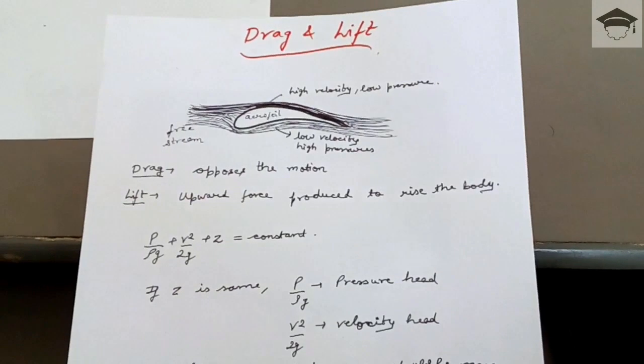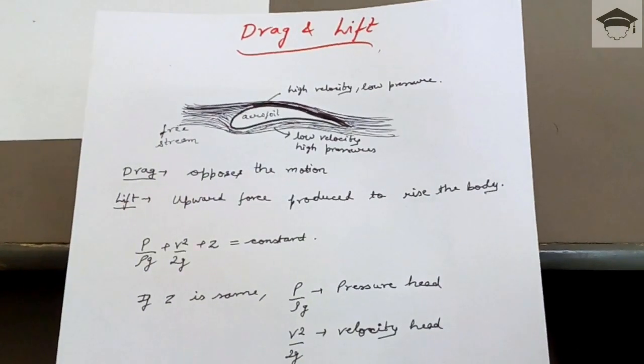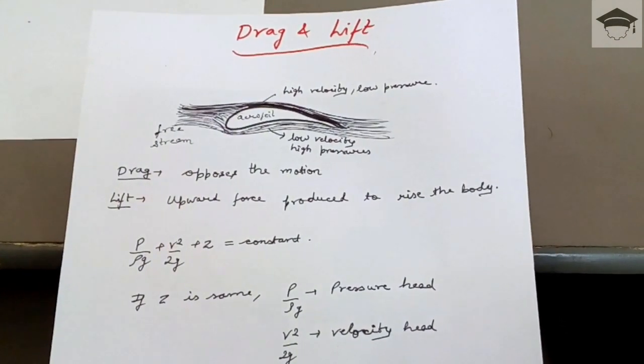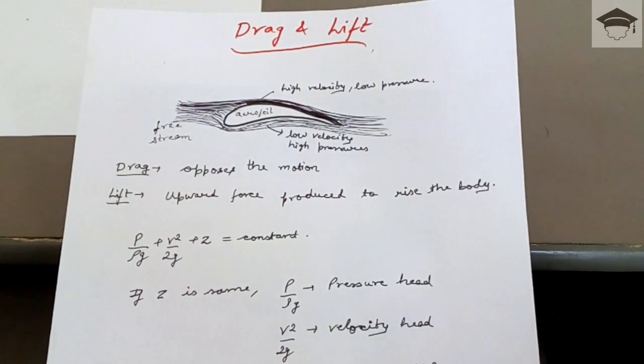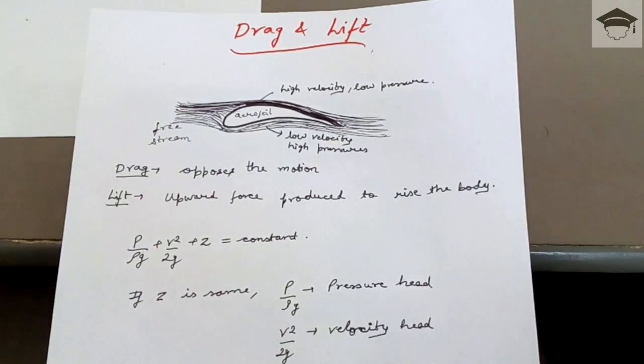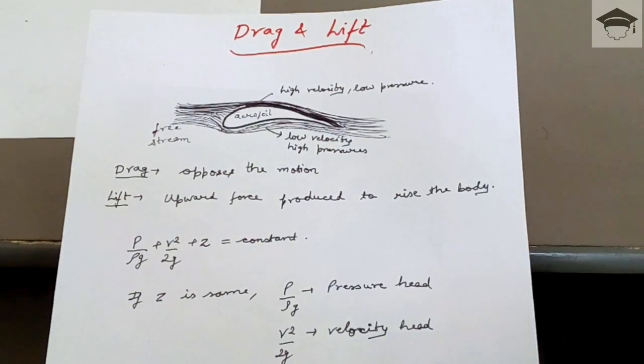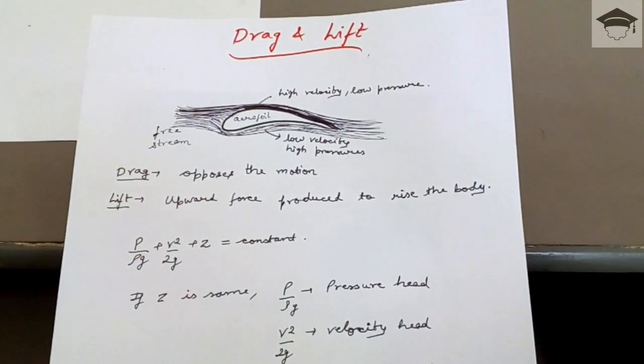These are termed as drag and lift. The drag force opposes the motion. That is, if a body tries to move, the drag force will be against it to oppose its motion, to retard it. That is known as drag force.